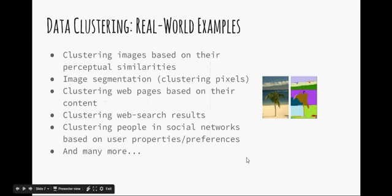We can see different real-world examples: clustering images based on perceptual similarities, image segmentation clustering pixels, clustering web pages based on their content, clustering people in social networks based on their properties and preferences, and many more.